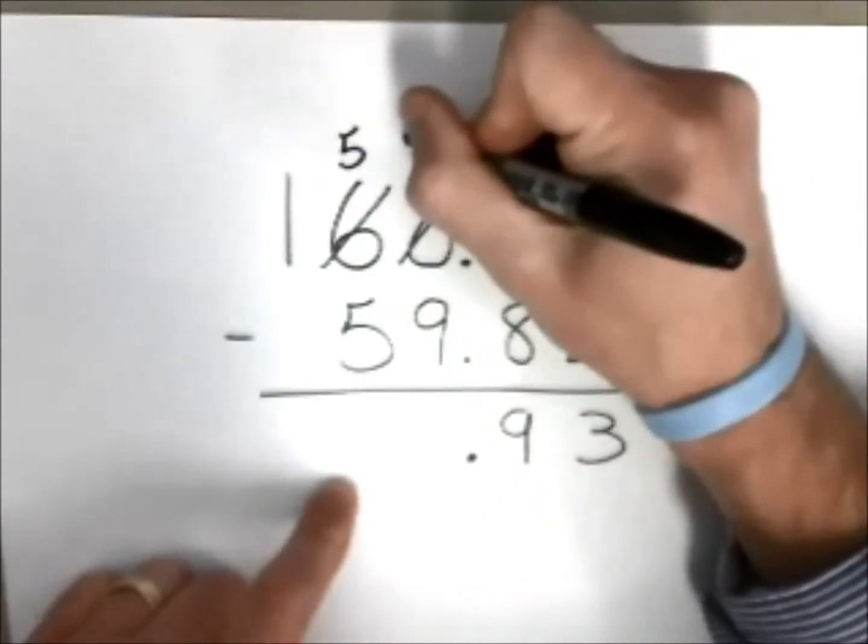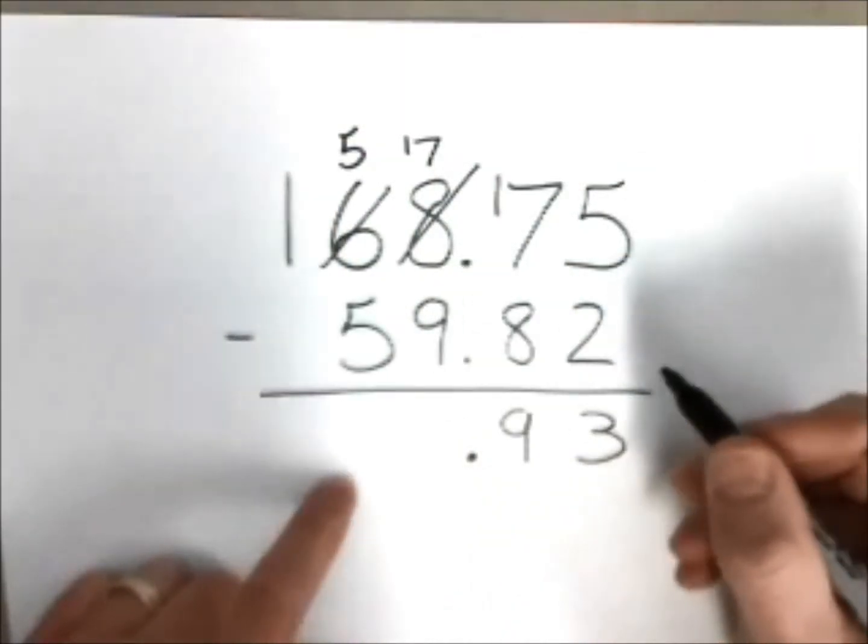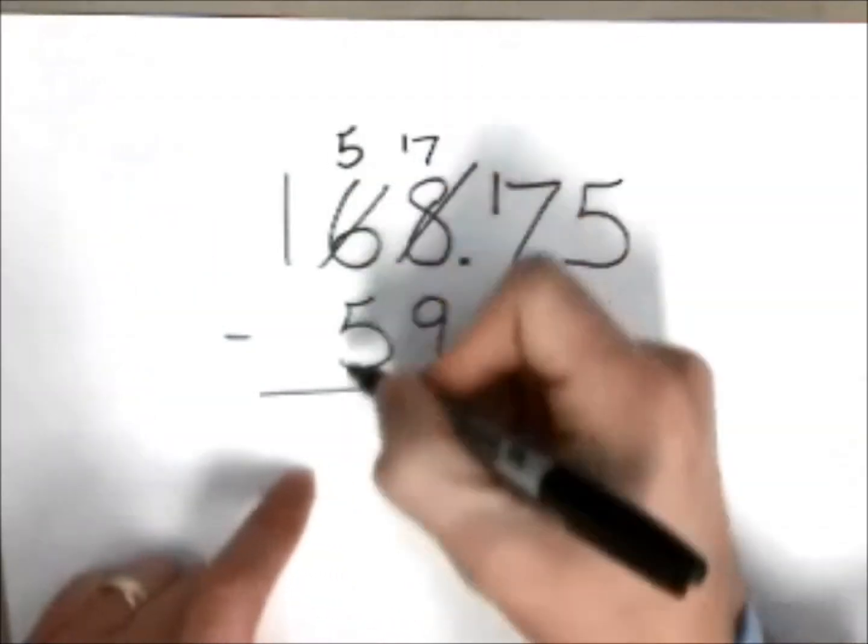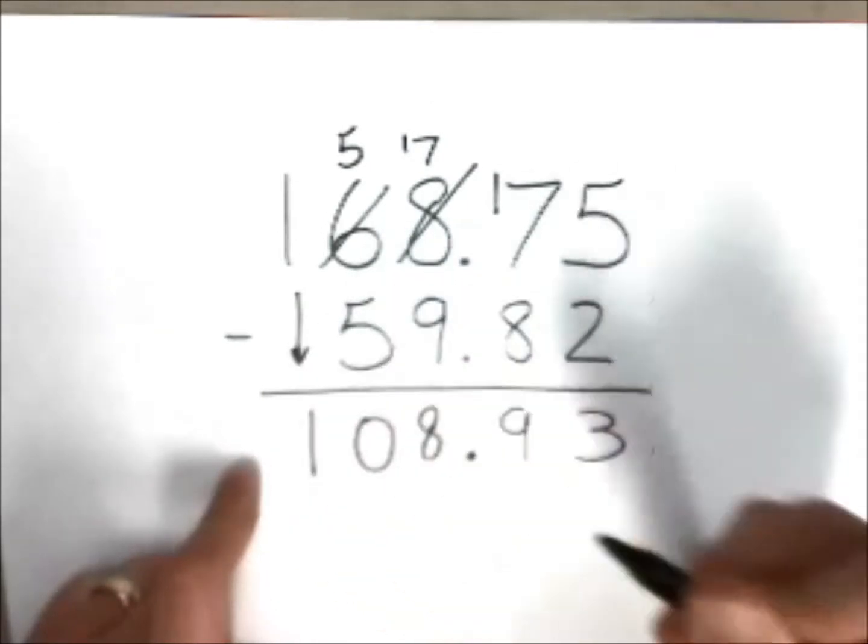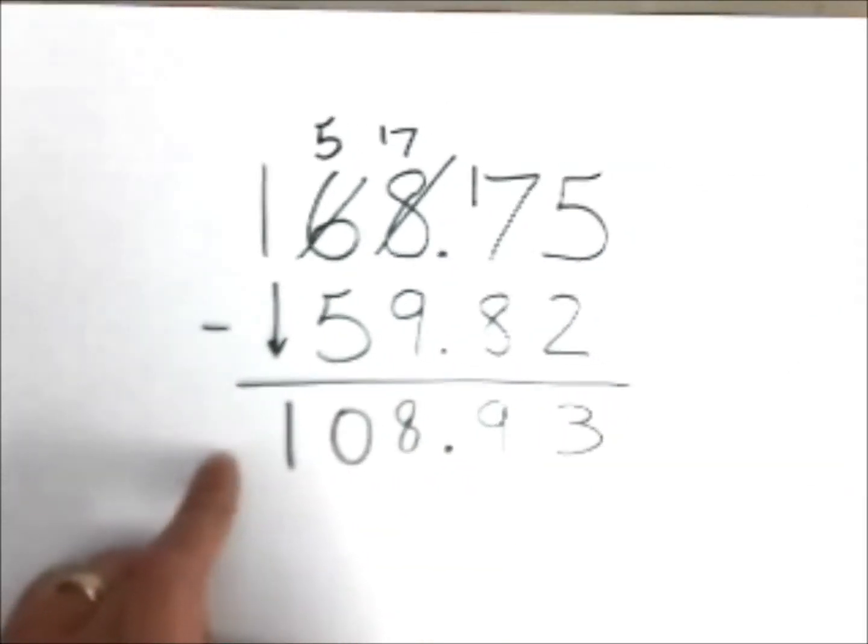Make that a five. Seventeen take away nine is going to leave you with eight. Five take away itself is going to leave you with zero. This one is going to fall down for a final answer of 108 and 93 hundredths. And as always...